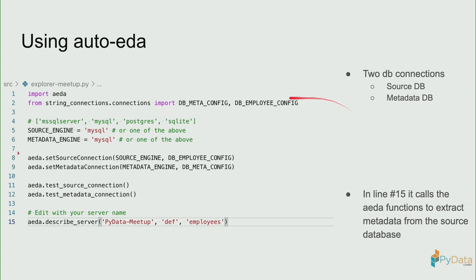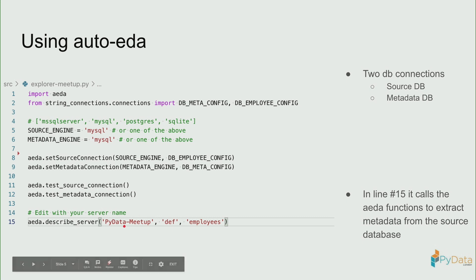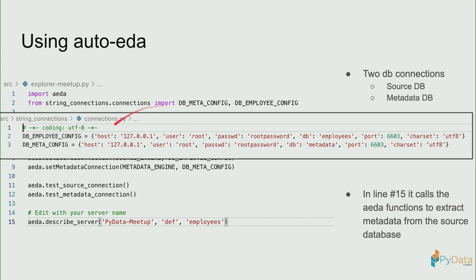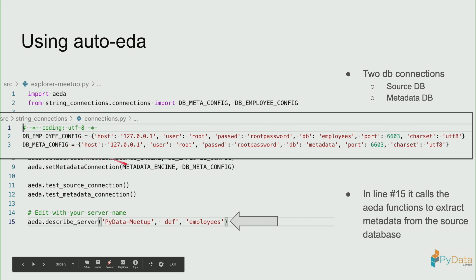This is a simple configuration. Basically, you import the library and pass the two connections. You just need to configure where the server is and specify what type of engine — MySQL and SQL Server are working well, as well as Postgres and SQLite. These connections specify where the server lives, the root, and the password. For this example, the employee's database from MySQL is used.